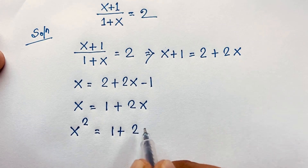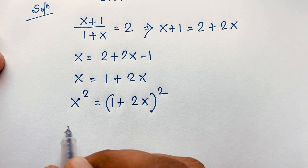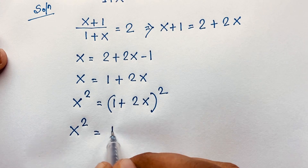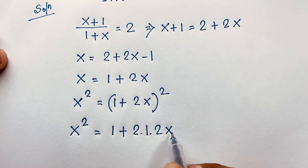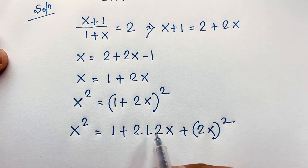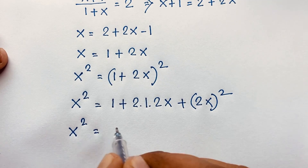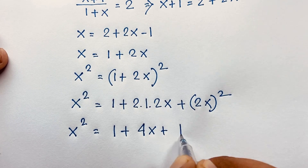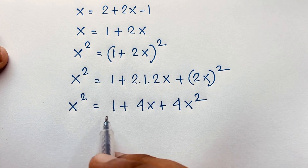So (1 + 2x) whole square, then x squared is equal to (1 + 2x) whole square, which expands using the formula (a + b)² = a² + 2ab + b², where a is 1 and b is 2x. So (2x) whole square gives us x squared is equal to 1 plus 4x plus 4x squared.